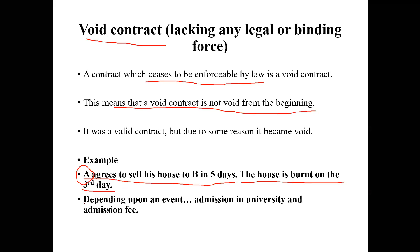Similarly, if you get a letter from a university saying you must pay your fee by 23rd October 2020 to get admission, the contract is valid until that date. After that date, if you haven't paid, the contract becomes a void contract. So it was valid at one point but became void because of certain reasons.